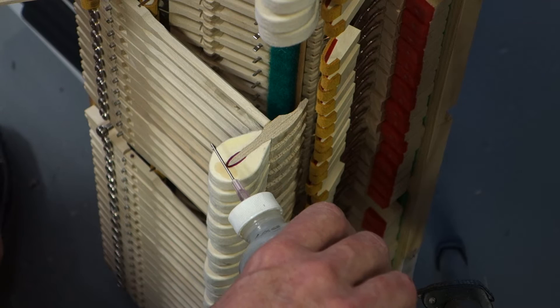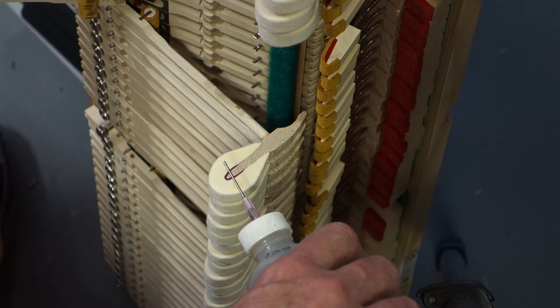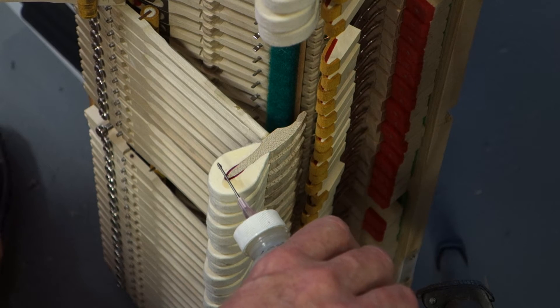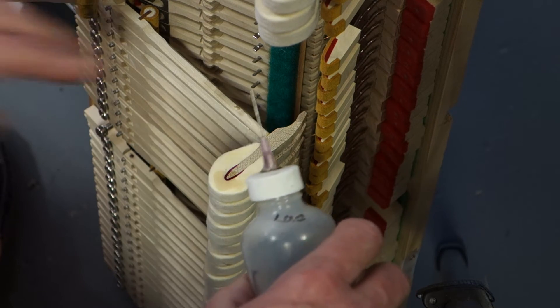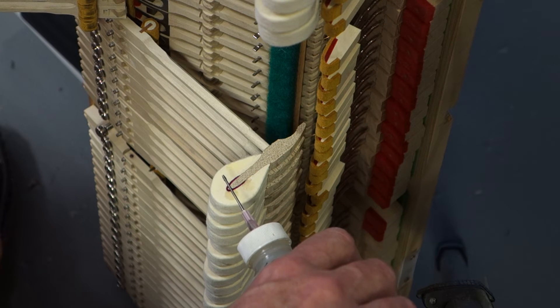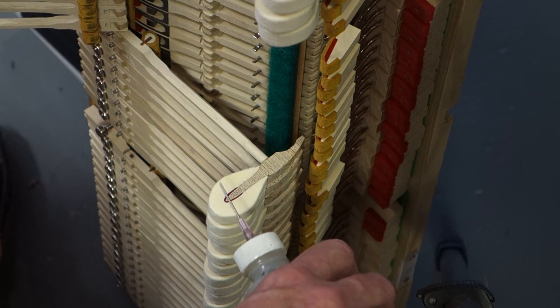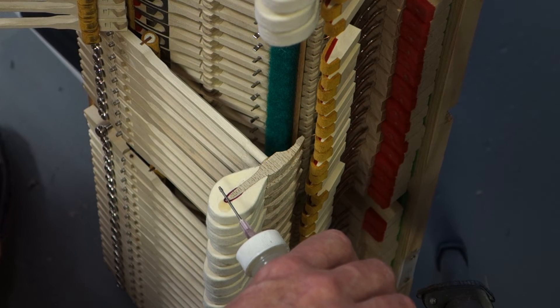These are Ronson hammers. They use Weikert felt, so they're relatively soft. They have a good tone right out of the box, very warm. But for this particular piano, a Foyerish 178, I want a little more sparkle without getting a harsh sound.